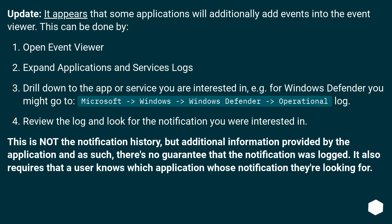Update: it appears that some applications will additionally add events into the Event Viewer. This can be done by opening Event Viewer, expanding Applications and Services Logs, and drilling down to the app or service you are interested in. For example, for Windows Defender you might go to: Microsoft > Windows > Windows Defender > Operational Log.